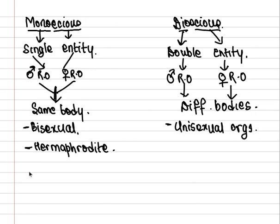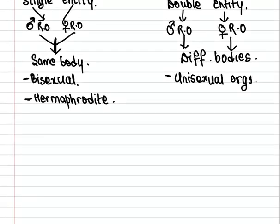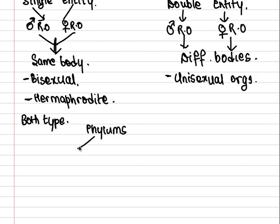Now we will learn the examples using the trick. First, what is 'both type'? Both type of classification means those phylums are placed under this category for whom some organisms of the phylum are unisexual and some are bisexual, belonging to the same phylum.